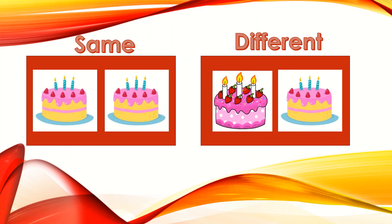Now let's find more examples. We have two sets of pictures. In one set, both the pictures of cake are same. But in another set, both the cakes are different. Which cake is different? So they are different.